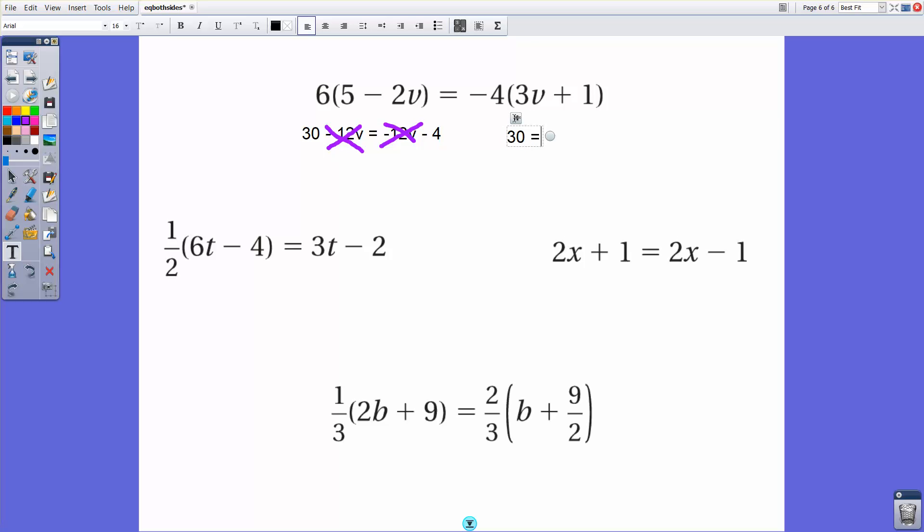And in this case, 30 does not equal negative 4. We have another situation where there are no solutions. There's no solution for v for this equation. Let's take a look at the next one.